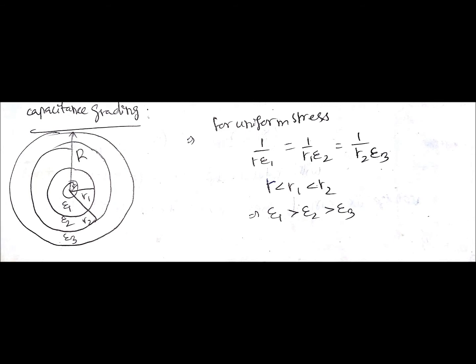If you take epsilon 1, epsilon 2, and epsilon 3 such that they follow this equation: 1 by r epsilon 1 equals 1 by r1 epsilon 2 equals 1 by r2 epsilon 3. Here we know that small r is less than r1 is less than r2. So for satisfying the above equation, epsilon 1 must be greater than epsilon 2 must be greater than epsilon 3. That's how you need to set the permittivity of different layers having radius r1, r2, and small r.